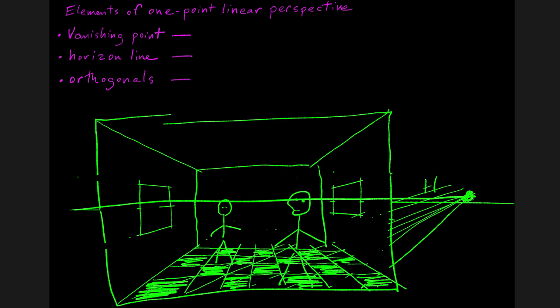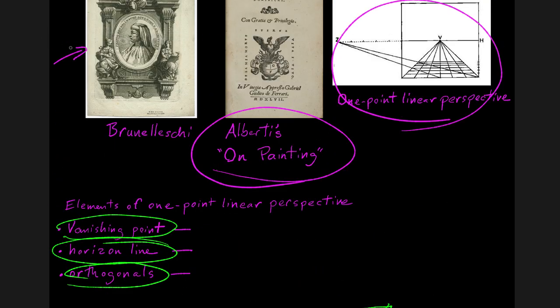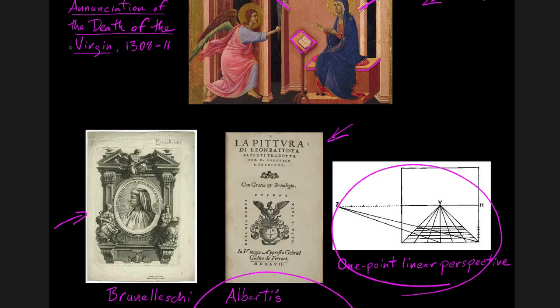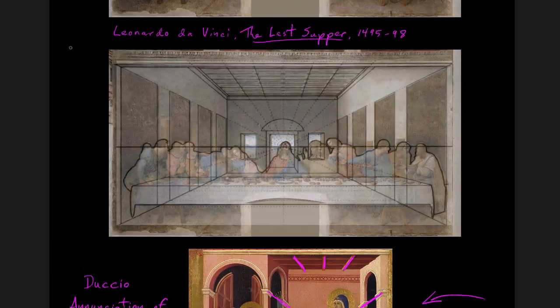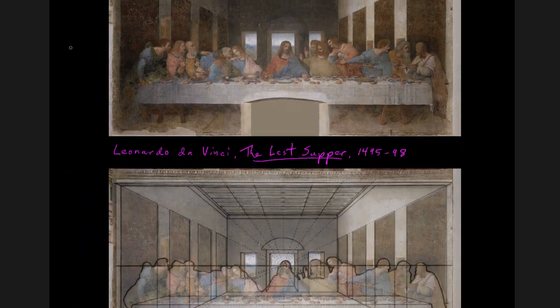And Alberti also said that that eye level, that horizon line would ideally also be the viewer's eye level so that the perspective would really work perfectly. So we have orthogonals, the diagonal lines that meet at the vanishing point. We know the vanishing point is a point on the horizon line and we understand how these correspond to the viewer and to creating an illusion of space. Let's take a look at what somebody who can really draw does with this. Let's take a look at Leonardo da Vinci's The Last Supper. So not you, not me at all. Someone who can really draw. So here is Leonardo's Last Supper.